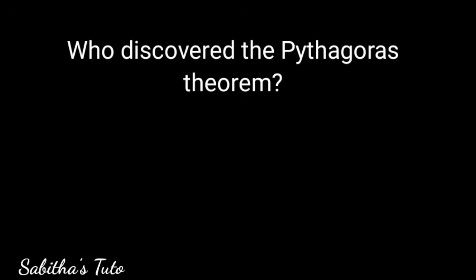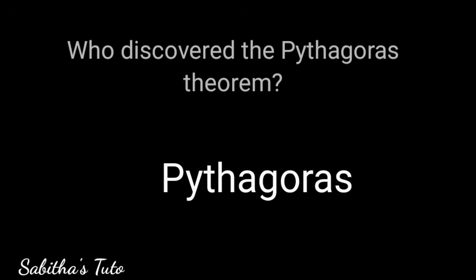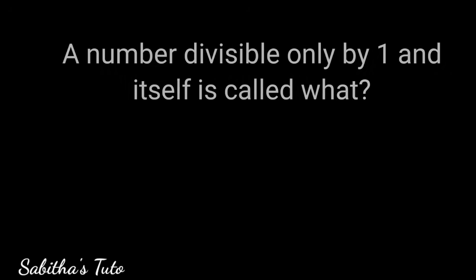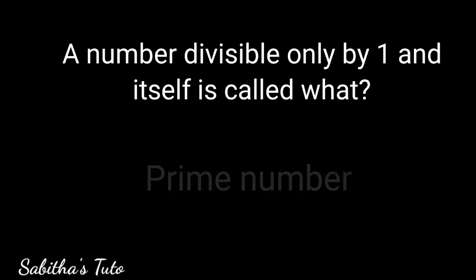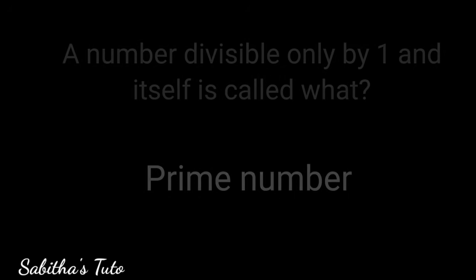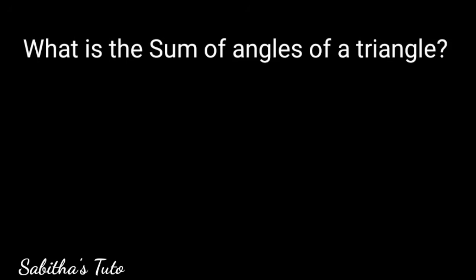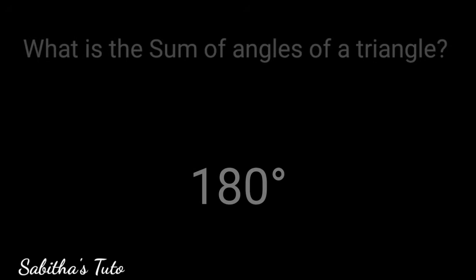Who discovered the Pythagoras Theorem? Pythagoras. A number divisible only by 1 and itself is called what? A prime number. What is the sum of angles of a triangle? 180 degrees.